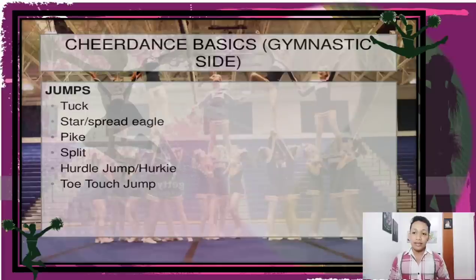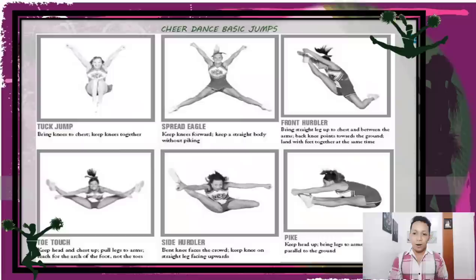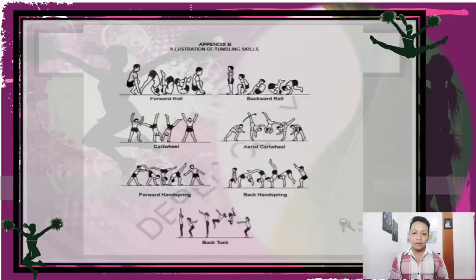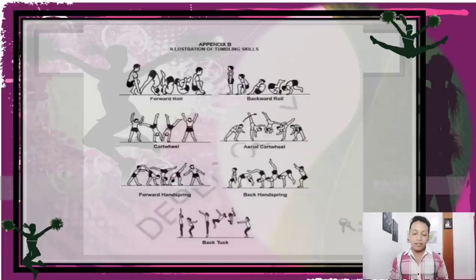For cheer dance basics on the gymnastic side, the jumps include: tuck, star or spread eagle, spike, split, hurdle jump or herky, and toe touch. Tumbling skills include: forward roll, backward roll, cartwheel, aerial cartwheel, forward handspring, back handspring, and back tap. Just a reminder — do not do these at home when alone and not supervised by professionals.